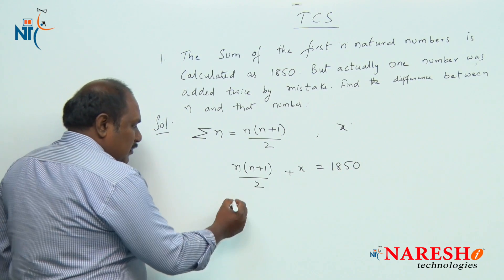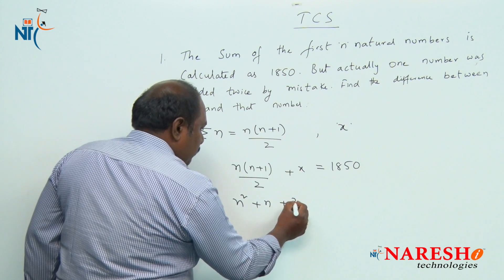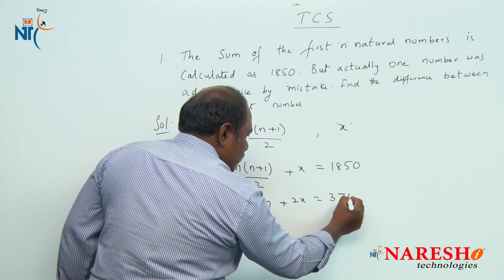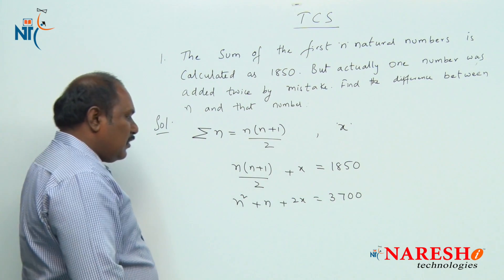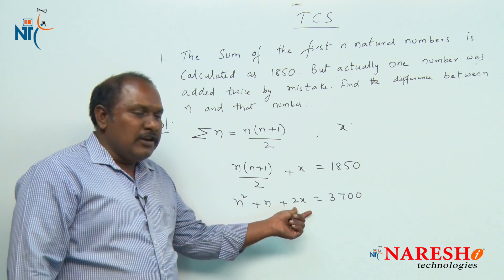Solving this: n square plus n plus 2x should be equal to 3700. Using simple common sense, we can tell what is the value of x.